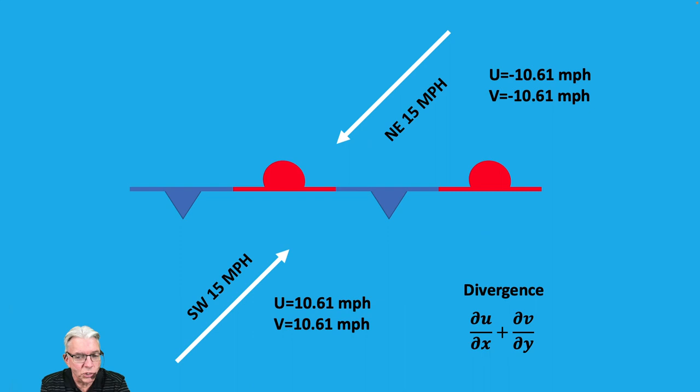Well, the U is going from plus 10.61 to minus 10.61, so it's negative. V is going from plus 10.61 to minus 10.61, so it's negative. And so you have a negative number, and you add another negative number, and you get an even bigger negative number, and that means the divergence is negative. And the negative value of divergence is convergence. That means the air is coming together, and when air comes together, it can't go down because you've got the ground there, and so it goes up. And if you've got enough moisture, you get clouds and precipitation, and that's why fronts are usually regions of active weather, because there is convergence going on in those areas.